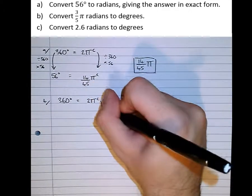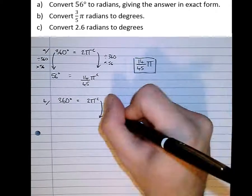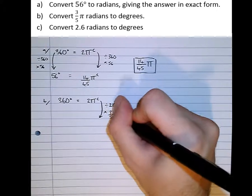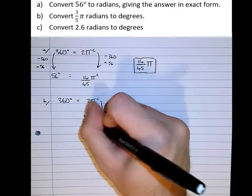This time, we want to go down to 1 radian, so we'll divide by 2π, then scale it back up to 3/5 radians, 3/5 π radians, which gives us 3/5 π radians.